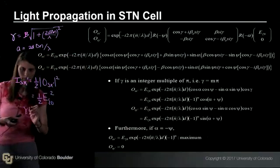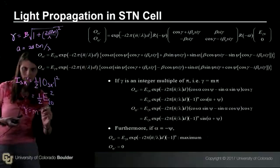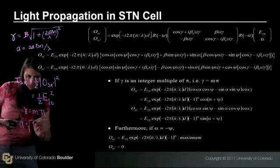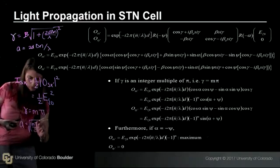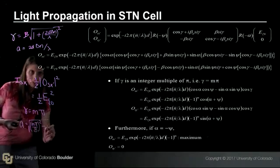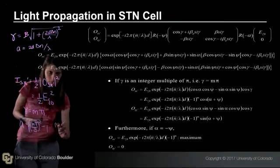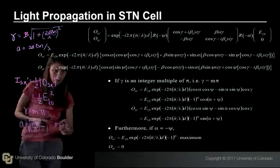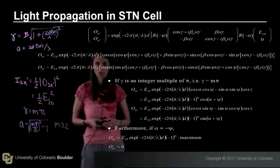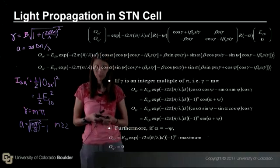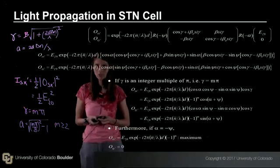So if we set gamma equal to m pi, what we find is that essentially a equals the square root of m pi over beta squared minus one. Okay, when m is greater than or equal to 2, this will give beta equal to 3 pi or 3 pi over 2, which is what's needed for this STN geometry.